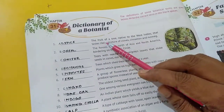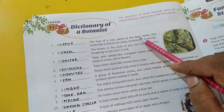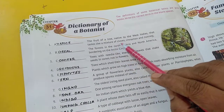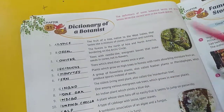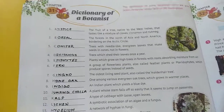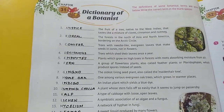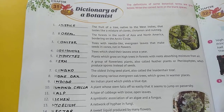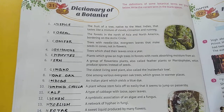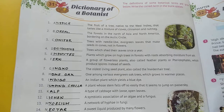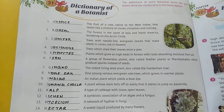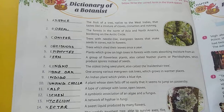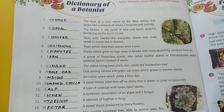The first one: the fruit of a tree native to the West Indies that tastes like a mixture of cloves, cinnamon and nutmeg. A kind of tree whose fruits taste like cloves, cinnamon and nutmeg — they are called allspice.